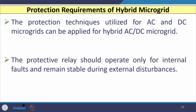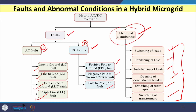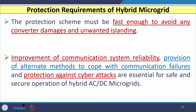Protection requirements of hybrid AC-DC microgrid include: protection techniques from both AC and DC microgrids must be applicable; protective relays should operate only for internal faults and remain stable for external disturbances; the protection scheme must be fast enough to avoid converter damage and unwanted islanding. Improvement in communication system reliability, provision of alternate methods to cope with communication failures, and protection against cyber attacks are three essential requirements for safe and secure operation.